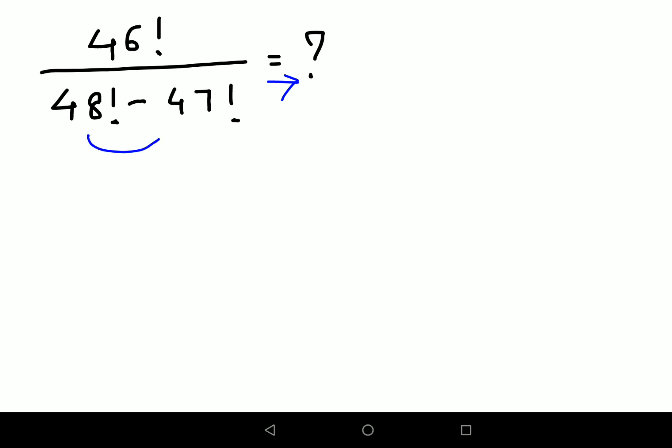First let's do that. I'll keep the numerator which is 46 factorial as it is. So this now comes out to be 48 times 47 factorial minus 47 factorial.